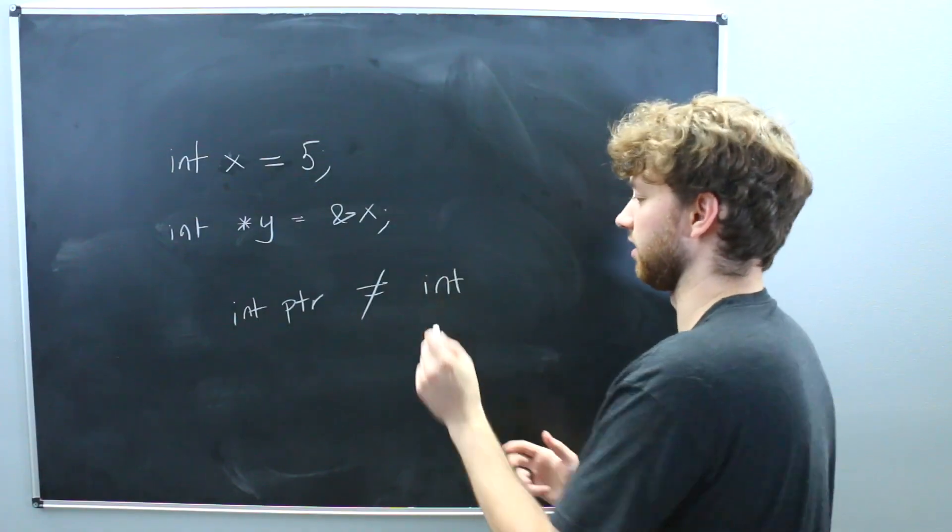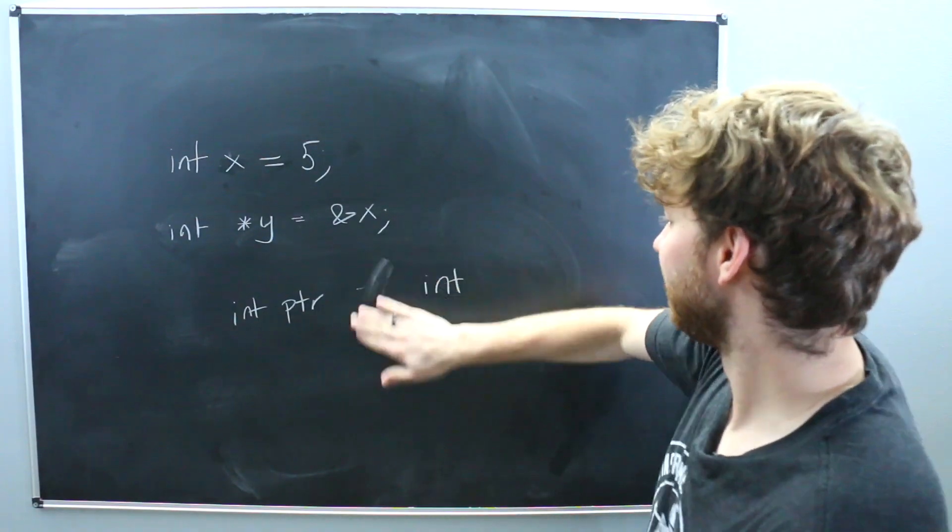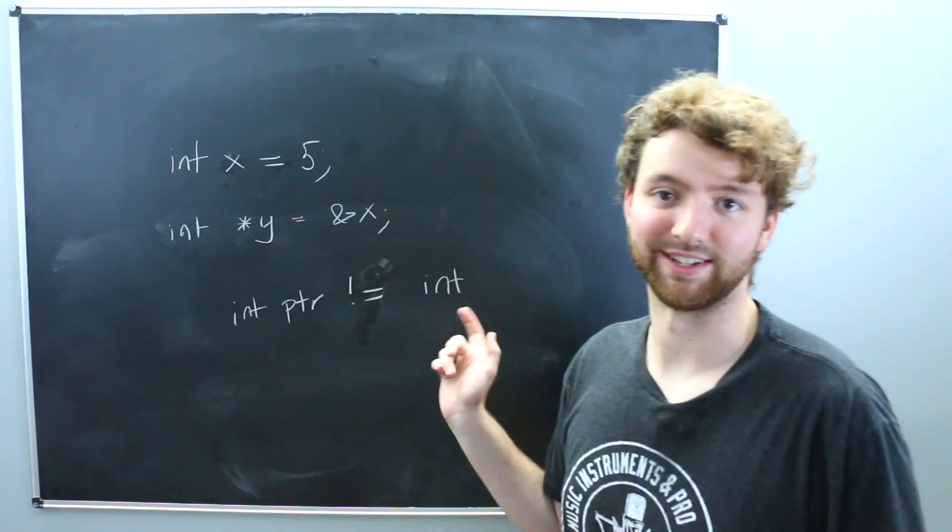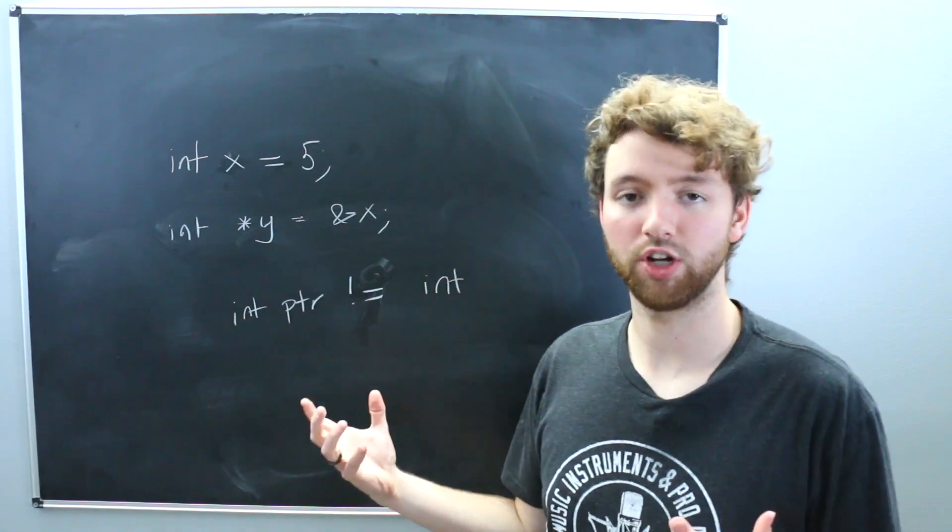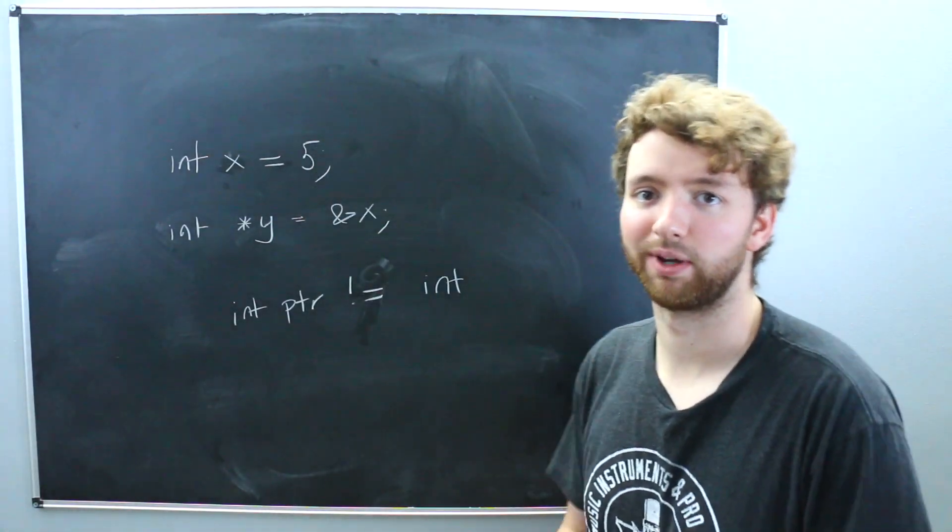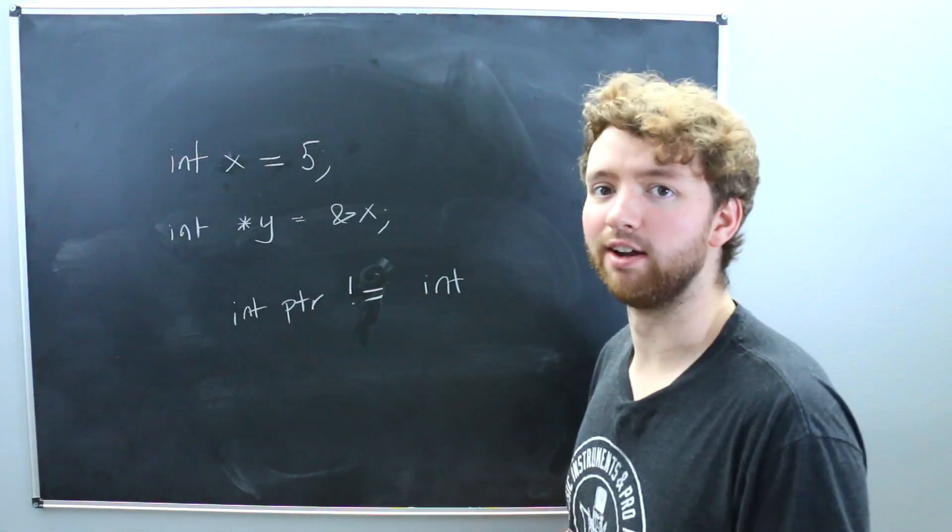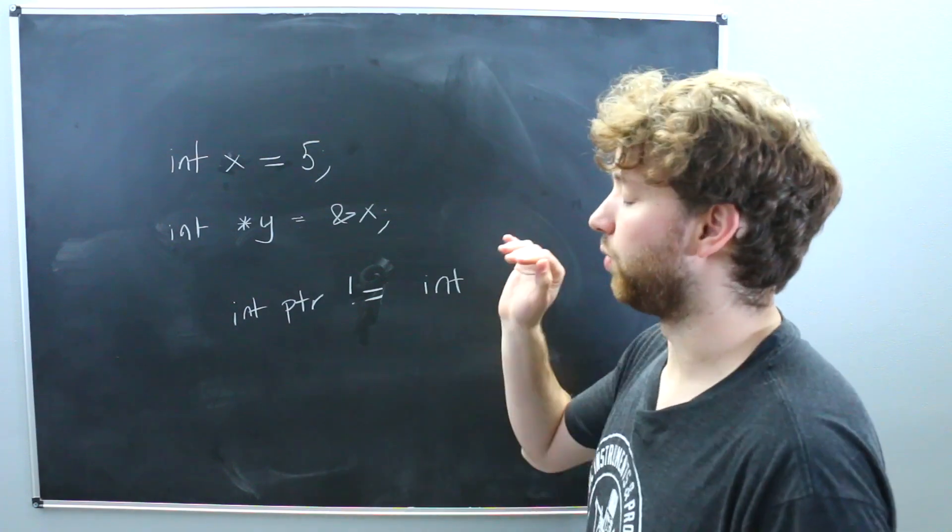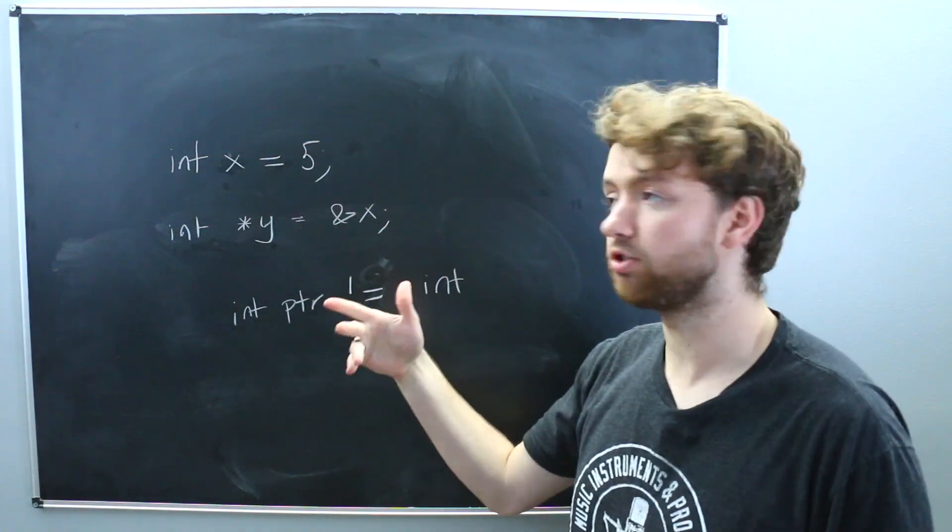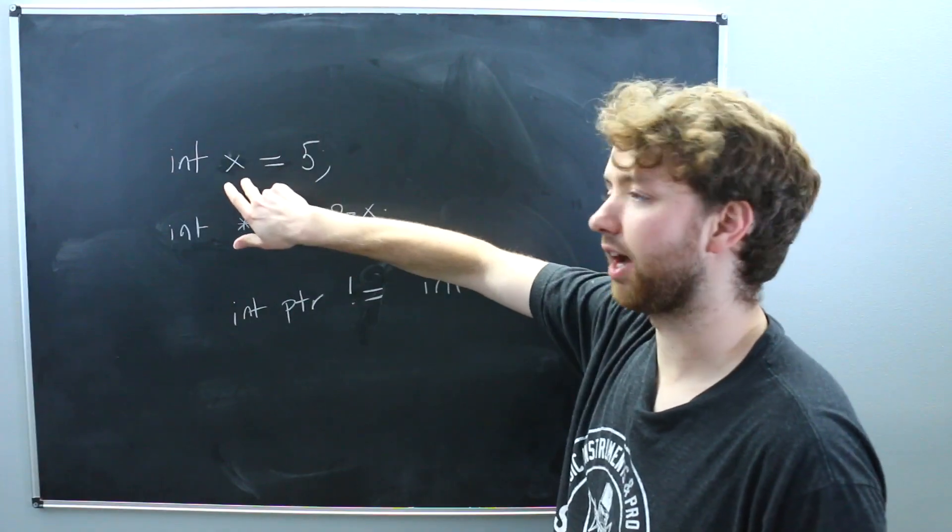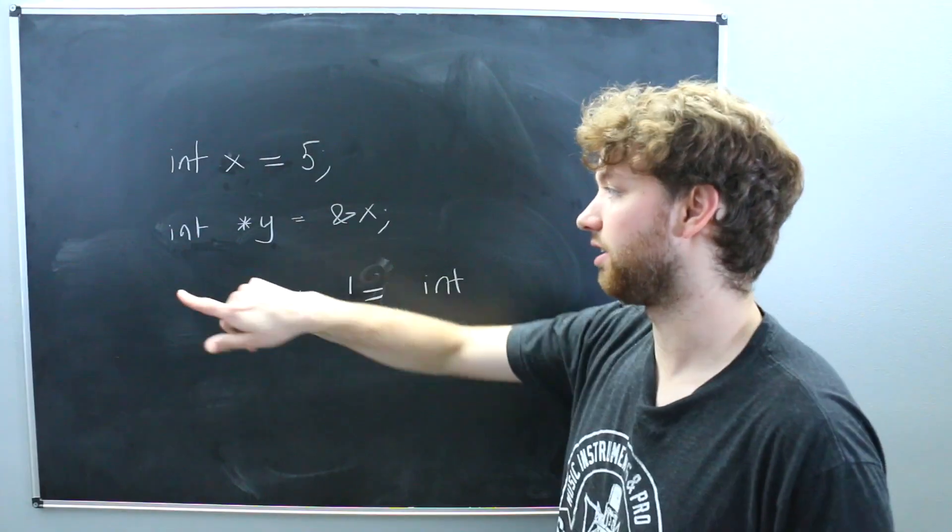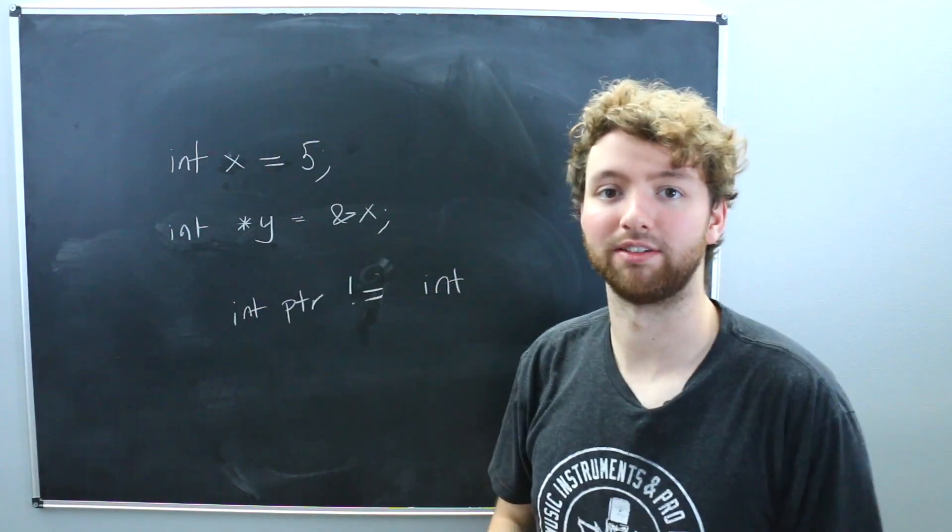Sorry, I hesitated there because I'm doing like the math notation. So this is not the same thing as an int. And if you try to use them interchangeably, you're going to get type errors. Things aren't going to compile or your code is just going to not work the way you'd expect. So just be aware. These are two separate types. When you need a pointer, you're going to use y. When you need an integer, you will want to use x. Or you can actually get the data that y points to. And that's what we're going to talk about now.